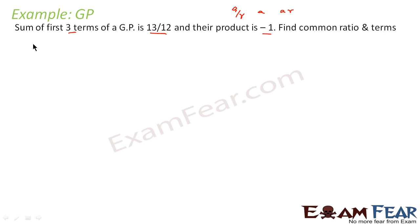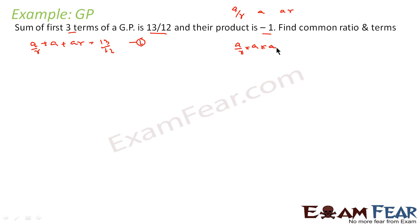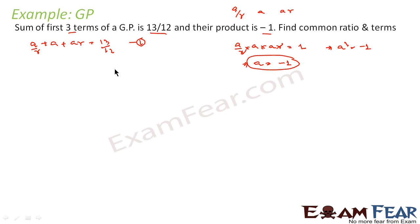So we are told that the sum of first three terms is 13/12, that is a/r + a + ar = 13/12. This is the first equation. Also, we are told that the product of these terms is minus 1, that is (a/r) × a × ar = minus 1. The r's cancel, so a³ = minus 1, therefore a = minus 1.